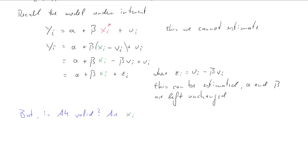So we can estimate that but the question is, is A4 valid? Namely, is the explanatory variable xi and the error term epsilon i uncorrelated? So the question is what is this term, the expected value of the cross product of xi and epsilon i? So we'll do a little bit of algebra again. We substitute for xi, xi asterisk plus vi, and for epsilon i our definition of that composite error term. And the question is, is this guy equal to zero? Because then A4 would be valid.